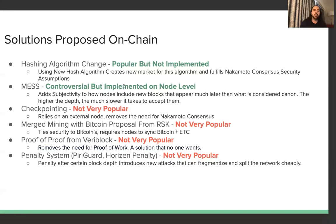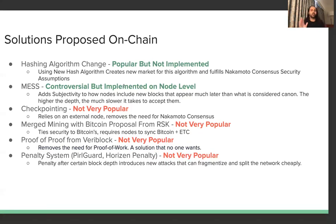For on-chain solutions: the most popular proposal is a hashing algorithm change. The best way to fulfill Nakamoto consensus security assumptions is to have a dominant hashing algorithm specific to your network, so miners can build ASICs and ETC becomes the majority chain for that algorithm, no longer relying on ETHash where Ethereum dominates. One proposal was SHA-3 (Kshack256), but it hasn't been implemented even a year later. Another solution is MESS — Modified Exponential Subjective Scoring — which was implemented at the node level without a hard fork. Any Geth node can toggle MESS to discourage 51% attacks.